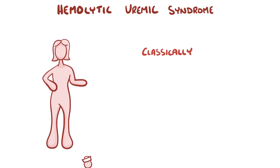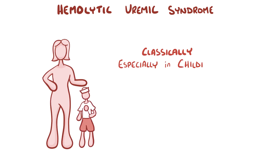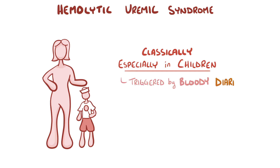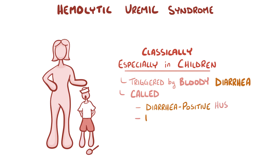Classically, especially in children, hemolytic uremic syndrome is triggered by a bout of bloody diarrhea. When that happens, it's called diarrhea-positive or D-positive hemolytic uremic syndrome, sometimes shortened to D+HUS, or simply typical HUS.